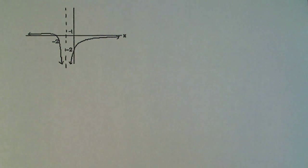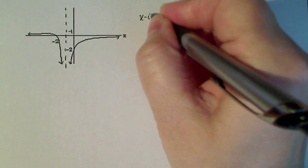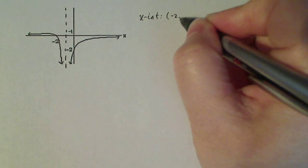Here's another rational function that we're going to try to find the equation to. Now I'm going to do the exact same thing I did the last time. I'm going to look at what the x-intercepts are. And it looks like I have one x-intercept at minus two zero.